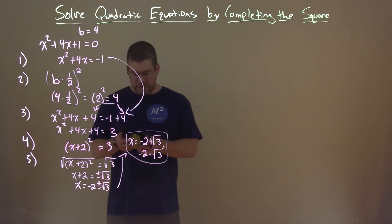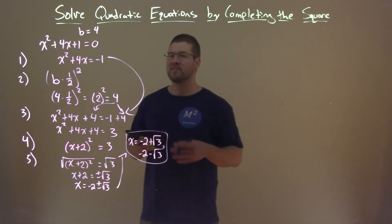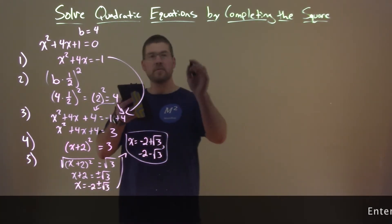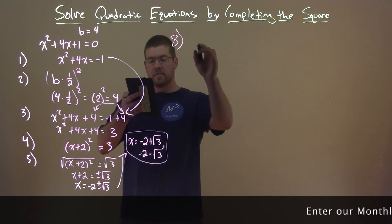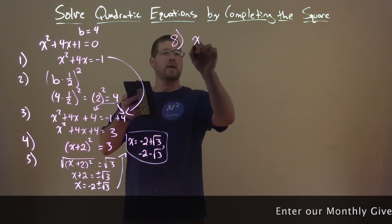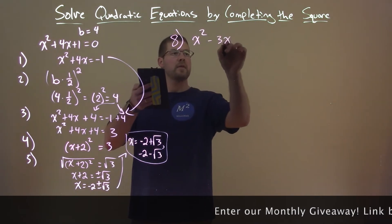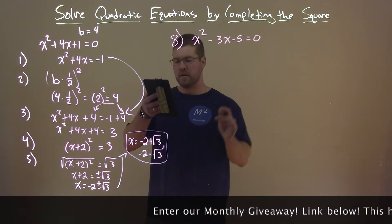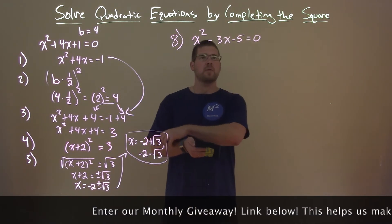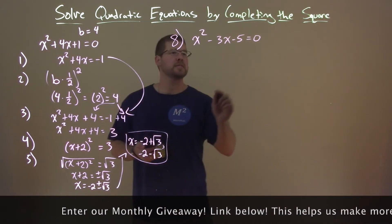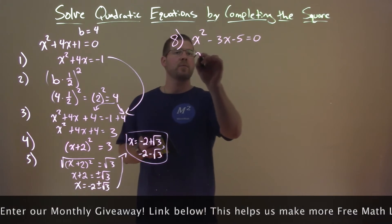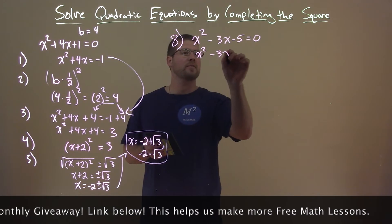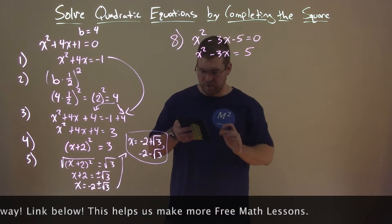We did an example with completing the square. Let's go through another example — repetition helps. Our next example is x squared minus 3x minus 5 equals 0. Following our steps, we add 5 to both sides and we have x squared minus 3x equals positive 5.